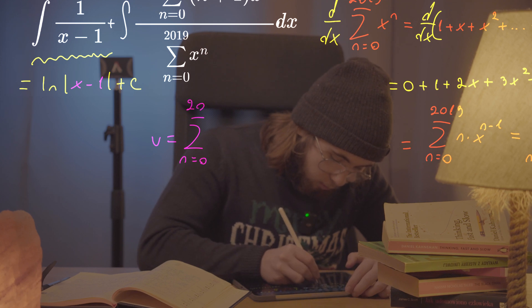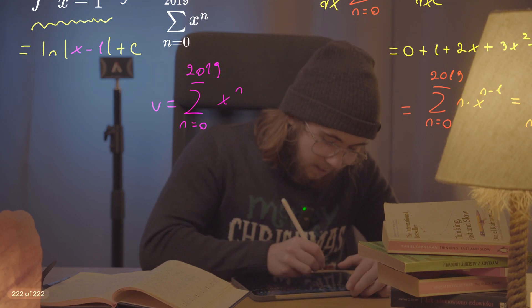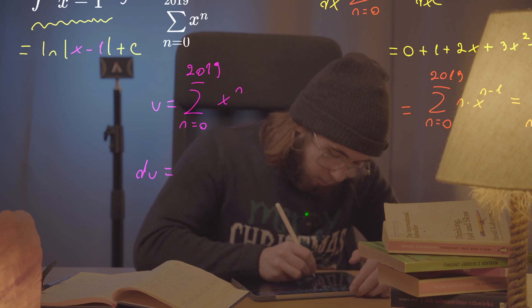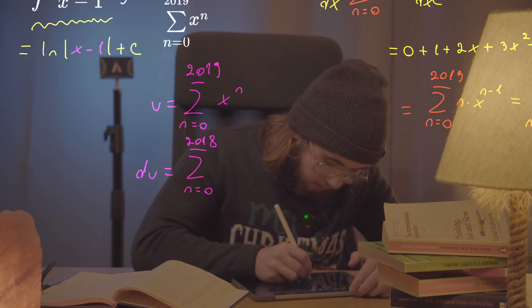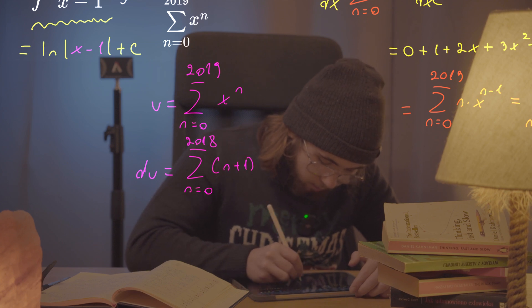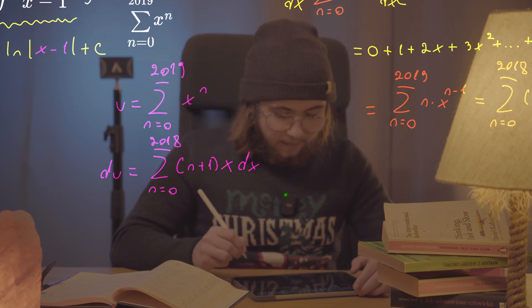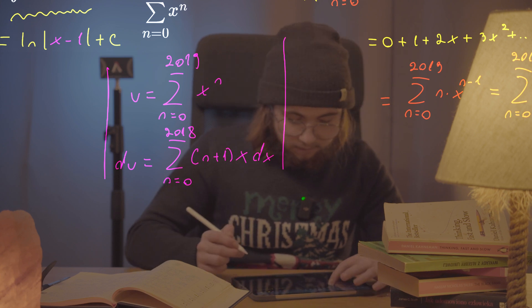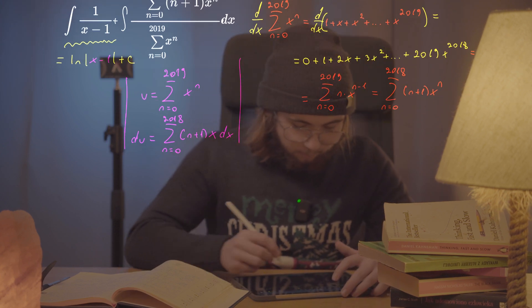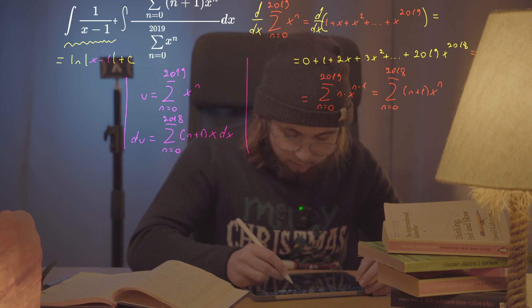I'll set u equal to the sum as n goes from 0 to 2019 of x to the power of n. Then du is going to equal the sum as n goes from 0 to 2018 of n plus one multiplied by x to the power of n, all times dx. There are no bounds of integration, so that's the entire substitution.